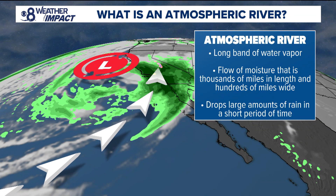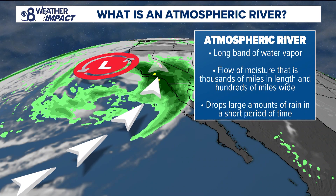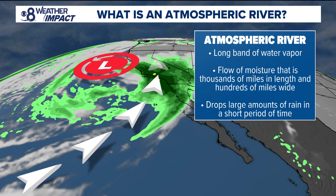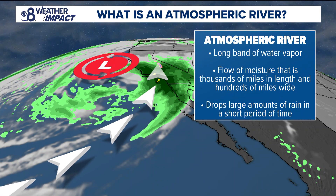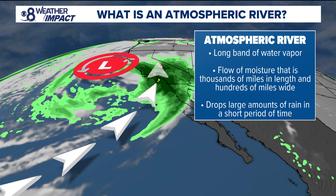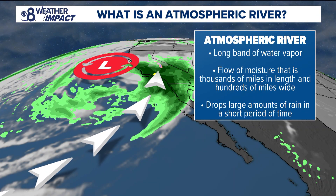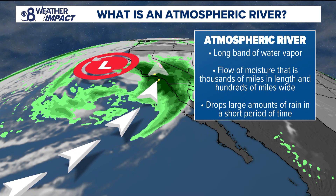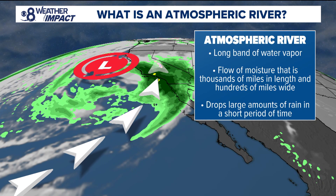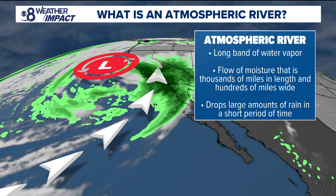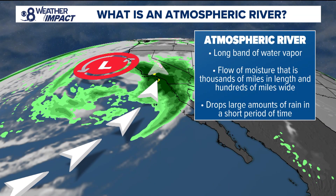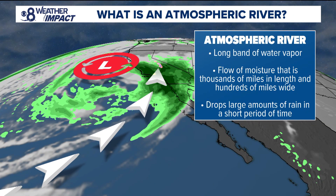The flow of that moisture can be thousands of miles in length and hundreds of miles wide. The big problem is that this massive swath of moisture drops large amounts of rainfall in a short period of time, and that's where a lot of the flood concerns come in. In many situations, it does not give the ground enough time to absorb that heavy rainfall before more moves in.